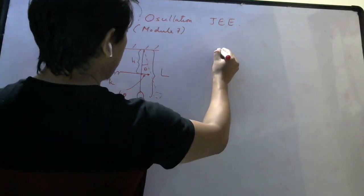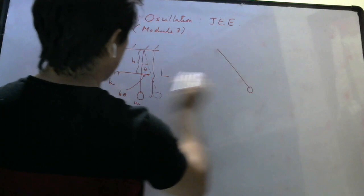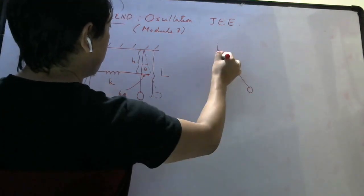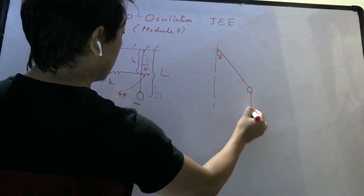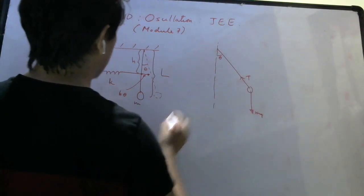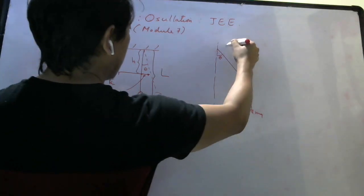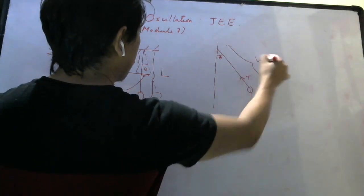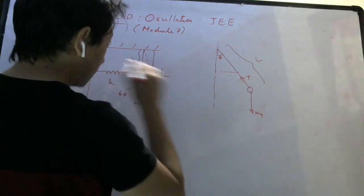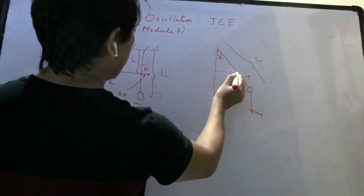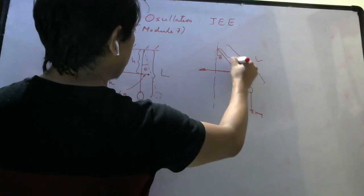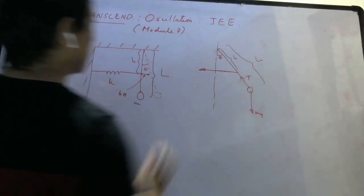Let us see what forces are acting on the pendulum when it is displaced by an angle theta. Here is your Mg, here is T, this length is M and at this end there is spring force this way. This is your H, okay?